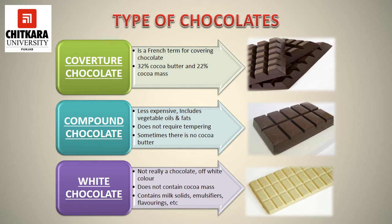Compound chocolate is less expensive and includes vegetable oils and fats. It does not require any tempering, and sometimes there is no cocoa butter involved in making compound chocolate. White chocolate is made from cocoa butter, contains no cocoa solids, and hence lacks the characteristic chocolate flavor. Sugar, vanilla, milk solids, and lecithin are added to cocoa butter to create white chocolate.